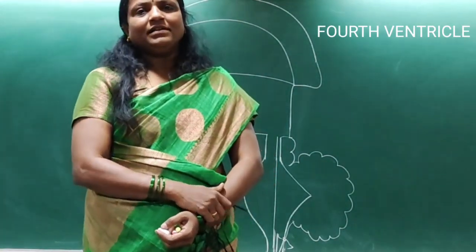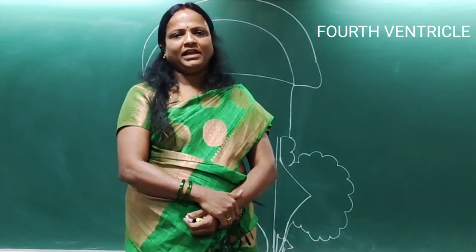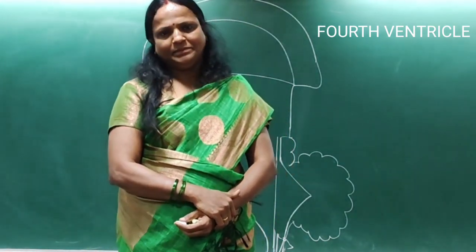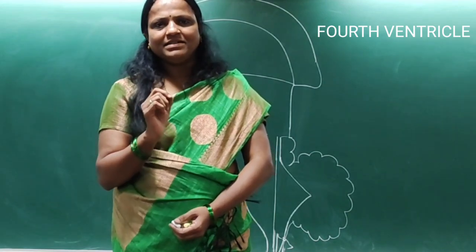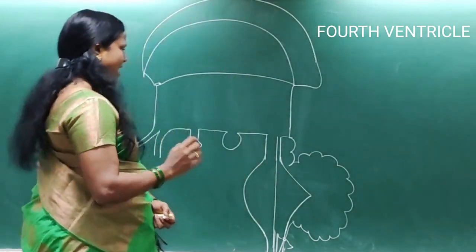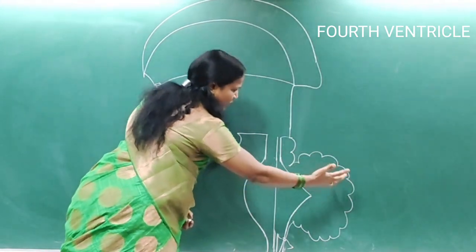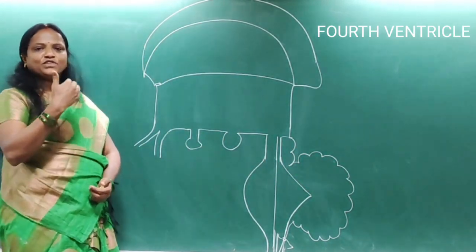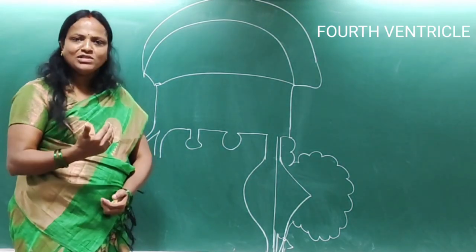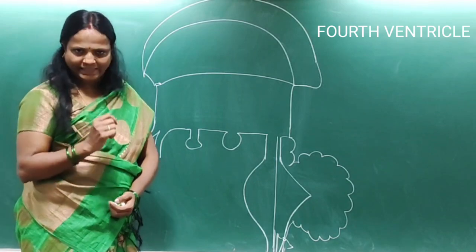Hello everyone, continuing with the ventricles of the brain. The topic for today's class is the fourth ventricle. The fourth ventricle is the cavity of the hindbrain, intervening between the cerebellar hemispheres posteriorly and the pons and the open part of the medulla oblongata anteriorly.